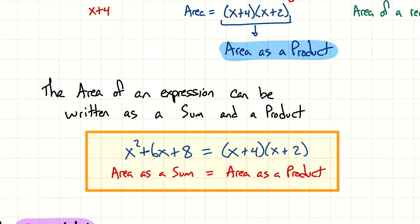What we've done is we've represented this area in two different ways. The area of this expression can be written as a sum and as a product. In summary, here's the original expression, which is really area as a sum. And then, here's the new expression, which is area as a product. They were the exact same tile pictures. We were just looking inside and then we went to look on the outside.